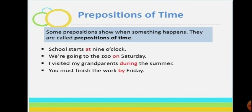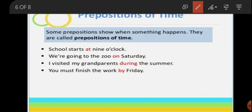Next, we have prepositions of time. Some prepositions show when something happens — kab wo cheez ho rahi hai — and they are called prepositions of time. For example: 'School starts at 9 o'clock.' Whenever a time is shown in a sentence like 9 o'clock or 12 o'clock, you use the word 'at'. 'We are going to the zoo on Saturday' — whenever a particular day like Saturday or Sunday is given, you use 'on'.